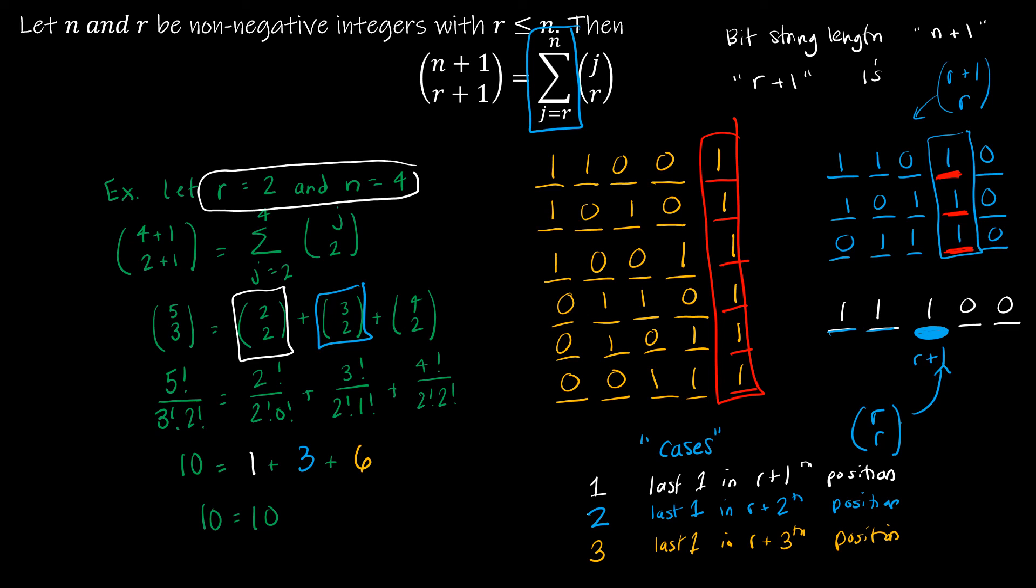I have r plus 2 spaces. And I'm choosing r of them, because there's only r ones left, because I've used one of the r's here, one of the ones here.